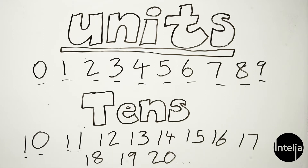Tens stand in twos — they have a friend. Like with ten, there's one and zero. With eleven, there's one and one. With twelve, there's one and two. And with thirteen, there's one and three. And so on with the other numbers.